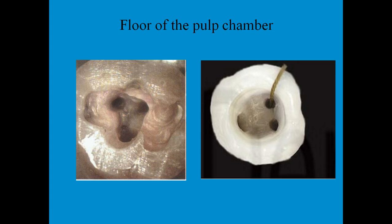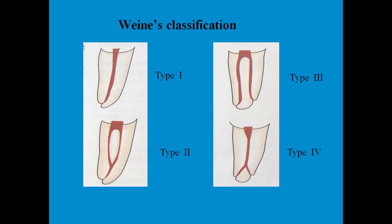Now, Weine's classification of root canals. The pulp extends into the root and exits through the apical foramen, but it is not always a single root canal. The simplest anatomy is where the pulp chamber extends as one root canal and exits as one apical foramen — that is type one.